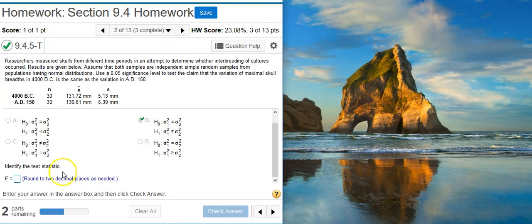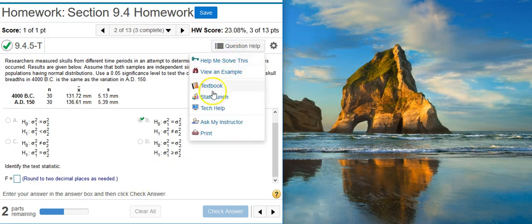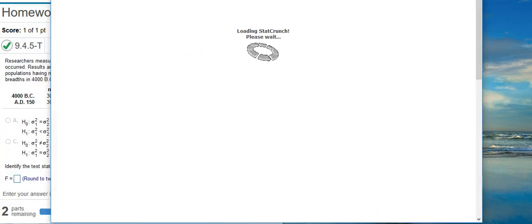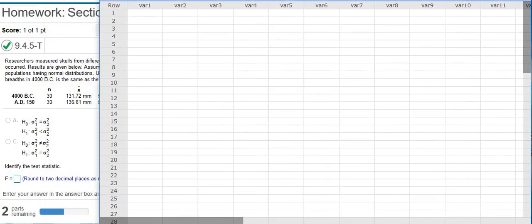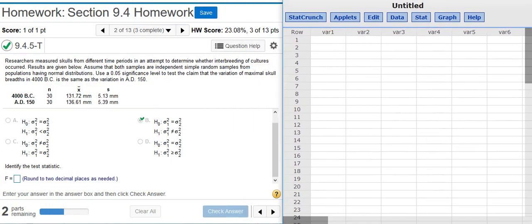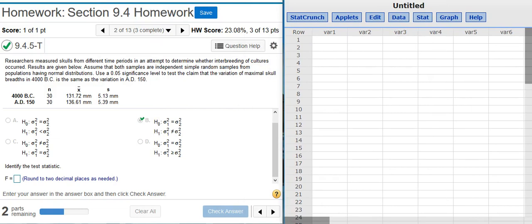The next part of this problem asks for the test statistic. Notice the test statistic is an F-score. F-score is calculated very easily. We can do that inside or outside of StatCrunch. I'm going to use StatCrunch because I'm a little lazy. We can do it well enough in our calculator, but like I said, I'm just a little bit lazy, so I'm just going to let the computer do it for me. Hey, I love living in the 21st century.